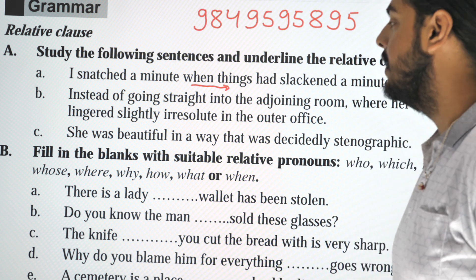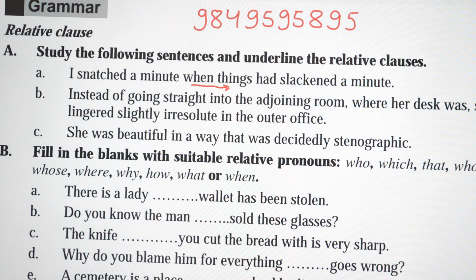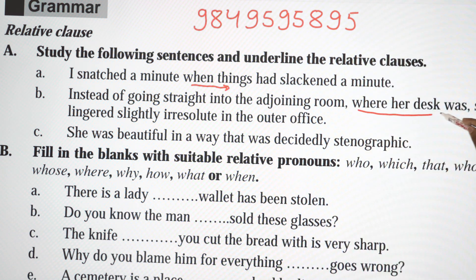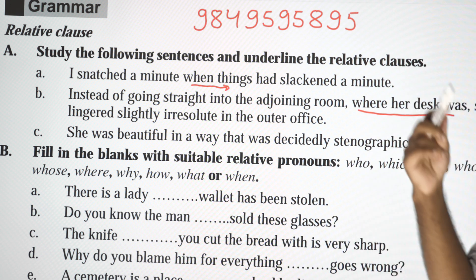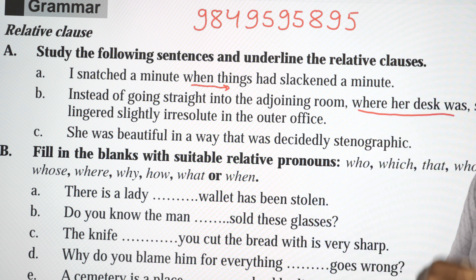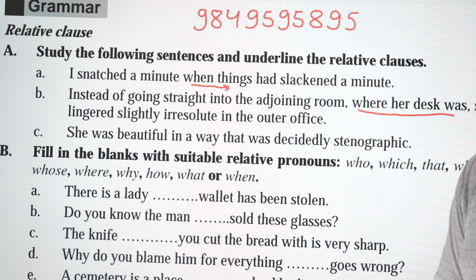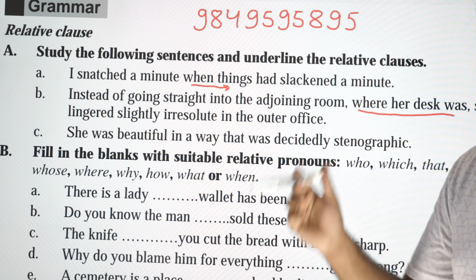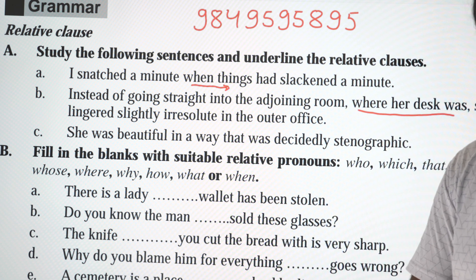Next: 'Instead of going straight into the adjoining room where her text was.' So 'where her text was' is the relative clause — it is the additional information.